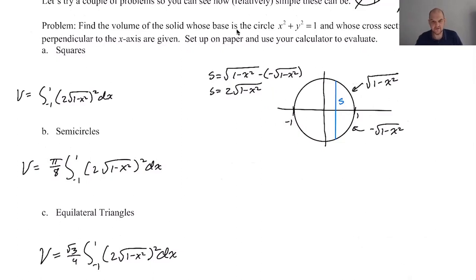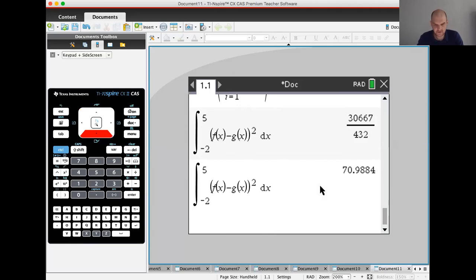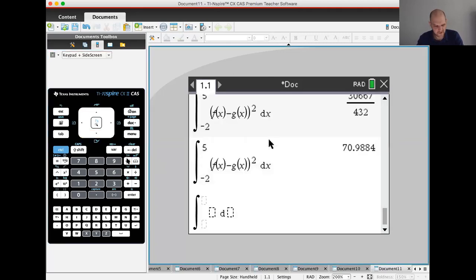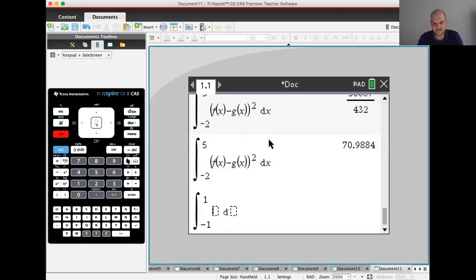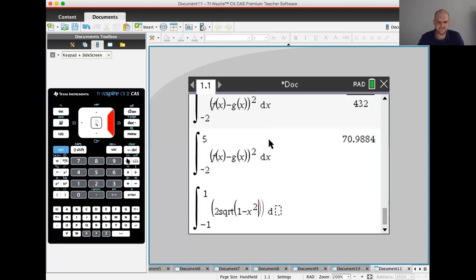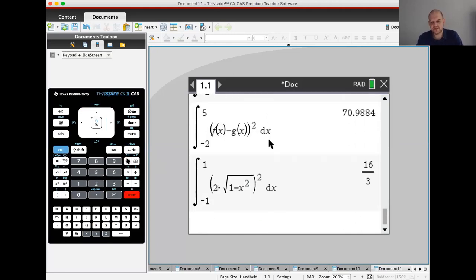All right. I'm going to use a calculator. I will get the values. Again, you don't really need a calculator on this because when you square that thing, it ends up pretty nice. But anyway, let's do the integral. So the one thing, you get really small volumes, I find, in most of these problems, which I always think is a little weird because I think a volume is big. I don't know. So the square is 16 thirds.